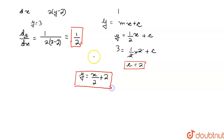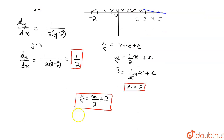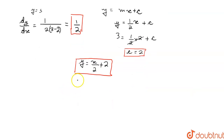Now, this tangent intersects the x-axis. We find the intersection point by putting y = 0 in the tangent equation y = x/2 + 2. When y = 0, x = −4. So the tangent meets the x-axis at (−4, 0).